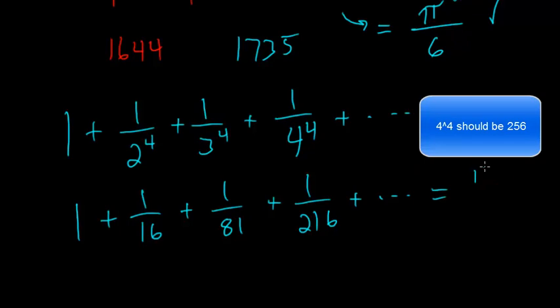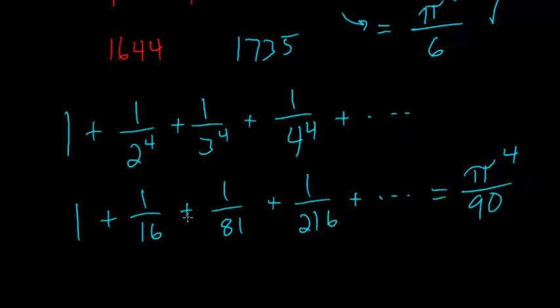And Euler found this result, too, that this is pi to the fourth power divided by 90. And Euler actually kept going for all of the even powers here up to 26. He was able to solve them.